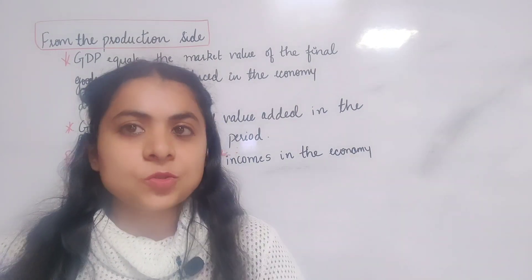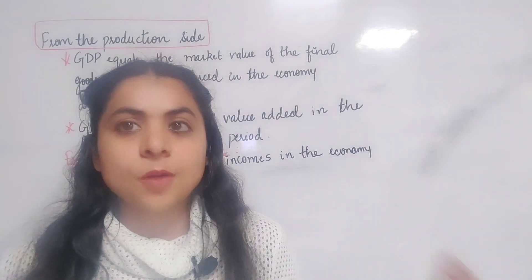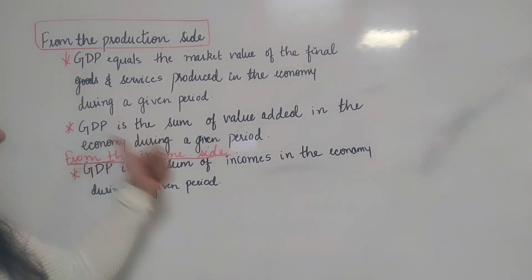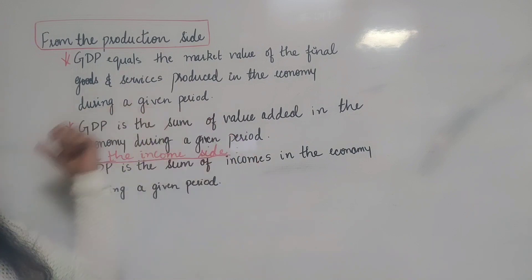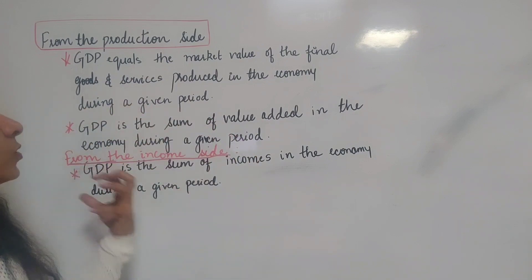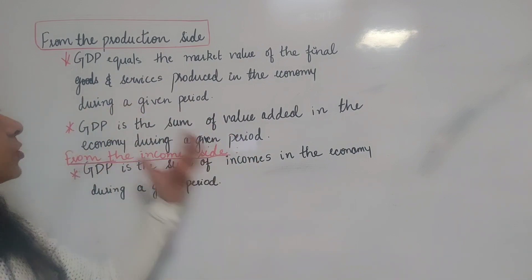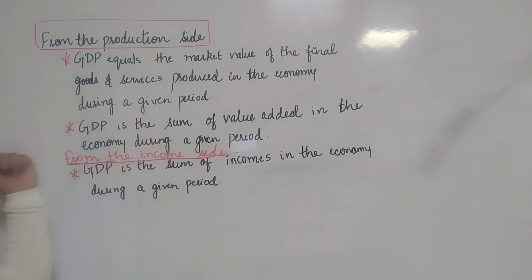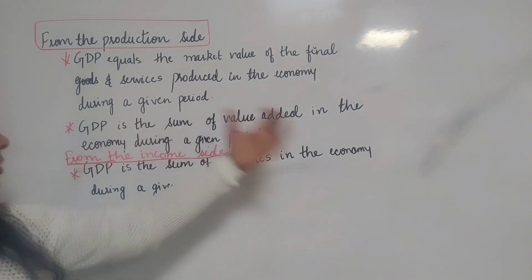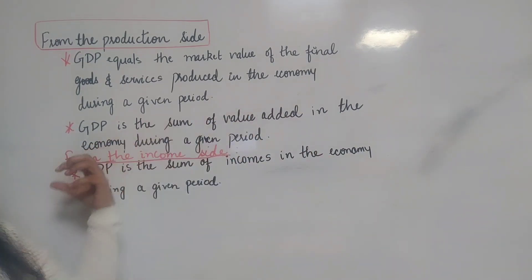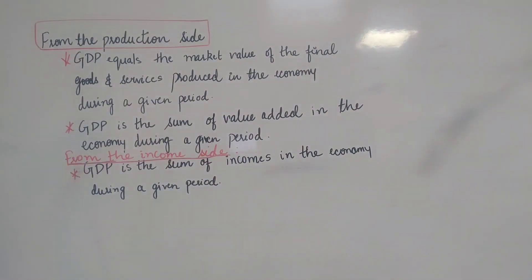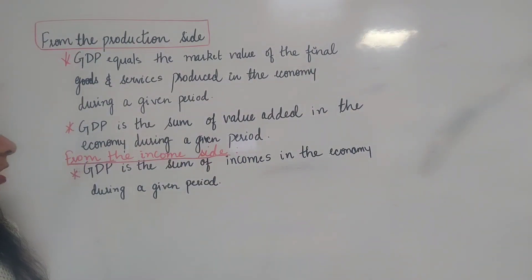So you can think of GDP in three different ways. From the production side, GDP equals the market value of final goods and services produced in the economy during a given period. GDP is also the sum of value added in the economy during a given period. And from the income side, GDP is the sum of incomes in the economy during a given period.